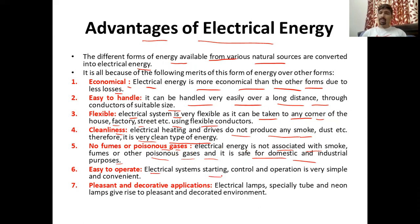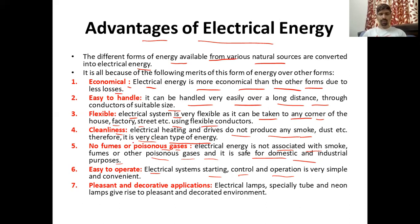Electrical systems are easy to operate — starting, controlling, and operation are very simple and convenient. We just need to know the electrical wiring; we can control and operate accordingly with the help of wiring, switches, and components of the electrical system.